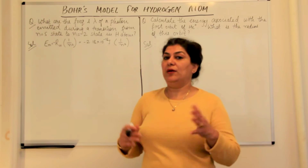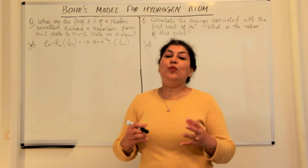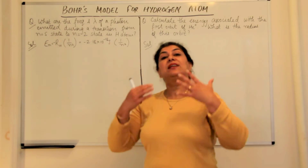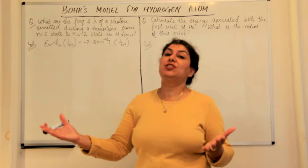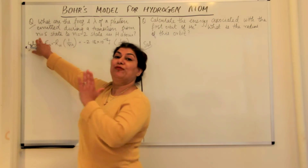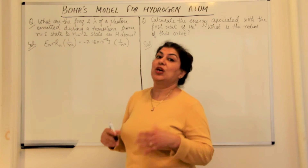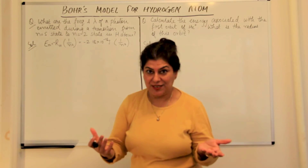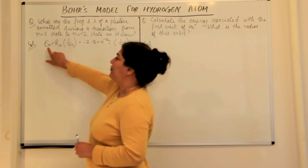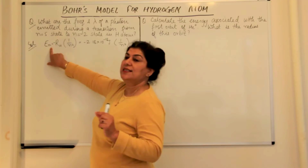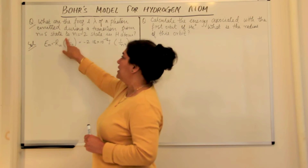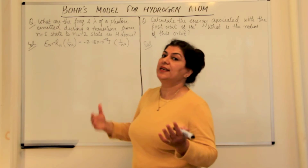Before we solve the numerical part, when an electron gains energy, it moves from a lower shell to a higher shell. But when an electron loses energy, it moves from a higher energy state to a lower energy state. Here the electron is moving from the 5th energy state to the 2nd energy state, which means that energy is being emitted. The energy of an electron in a certain state is given by the formula: minus Rh times 1 upon n squared, where n is the energy level.